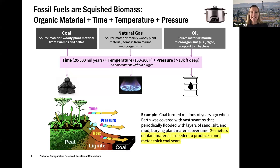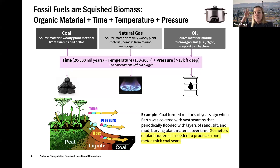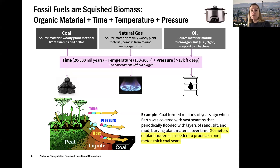To visualize what it means to squish biomass into fossil fuels: for coal, it's literally 20 meters of woody, plant-like material from swamps squished into a one-meter-thick coal seam. You can see where we get the energy density in fossil fuels — all that chemical energy from biomass is concentrated into that coal.